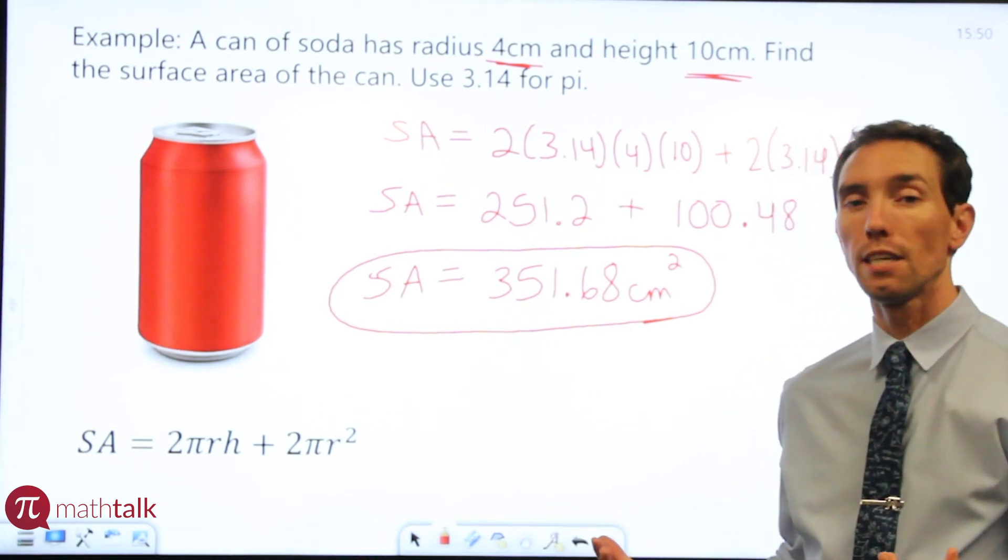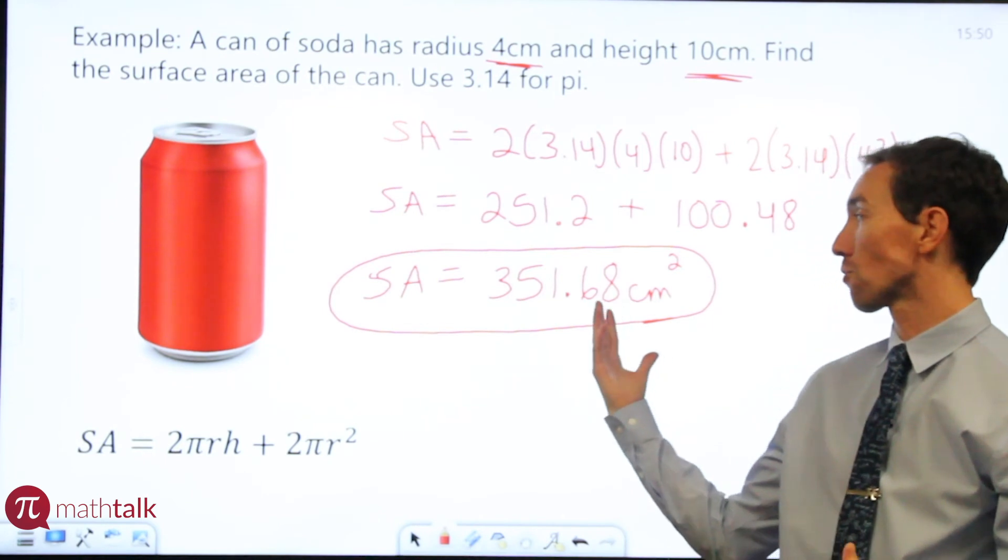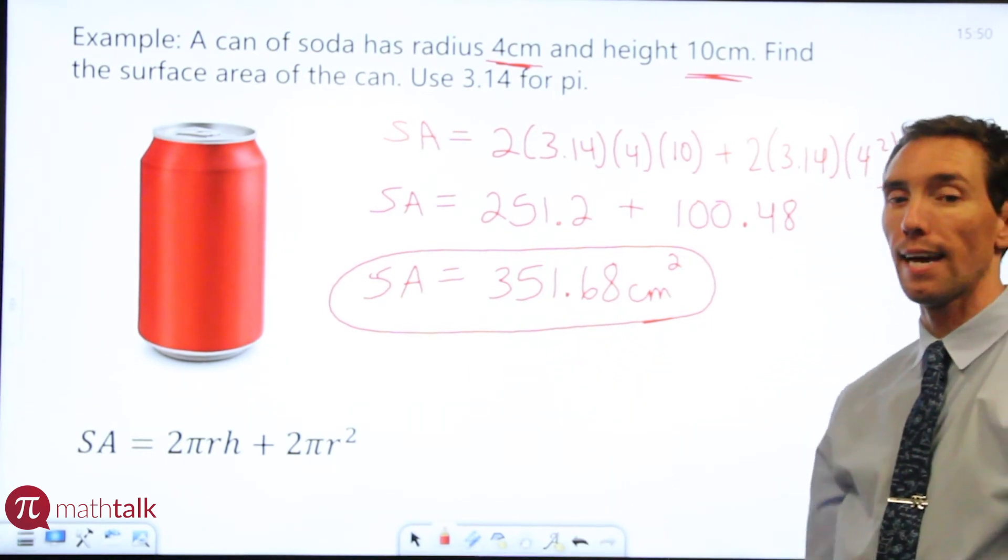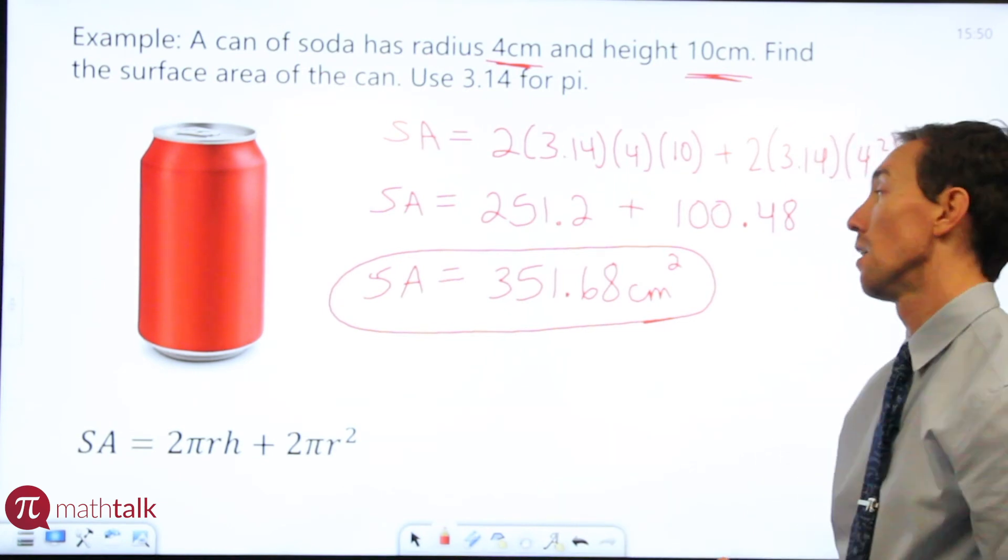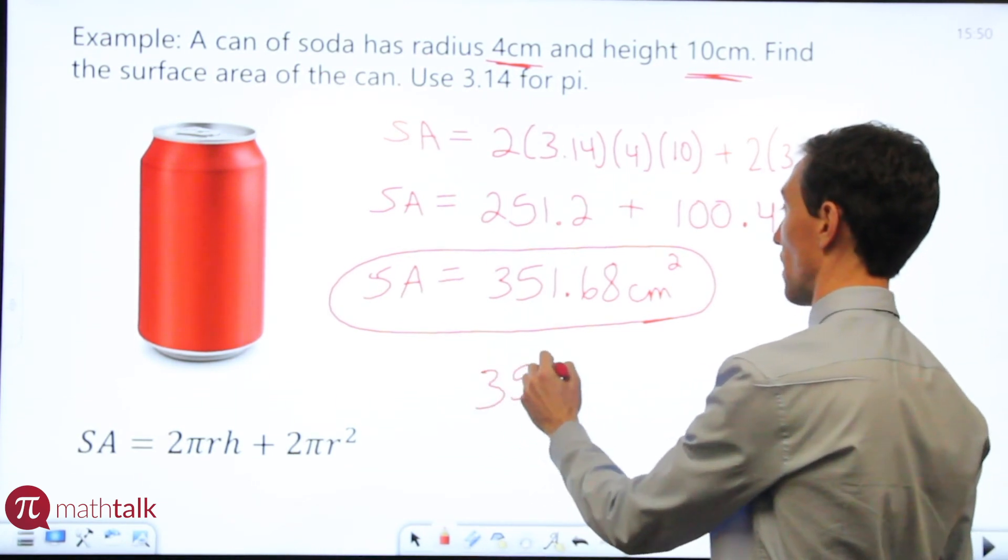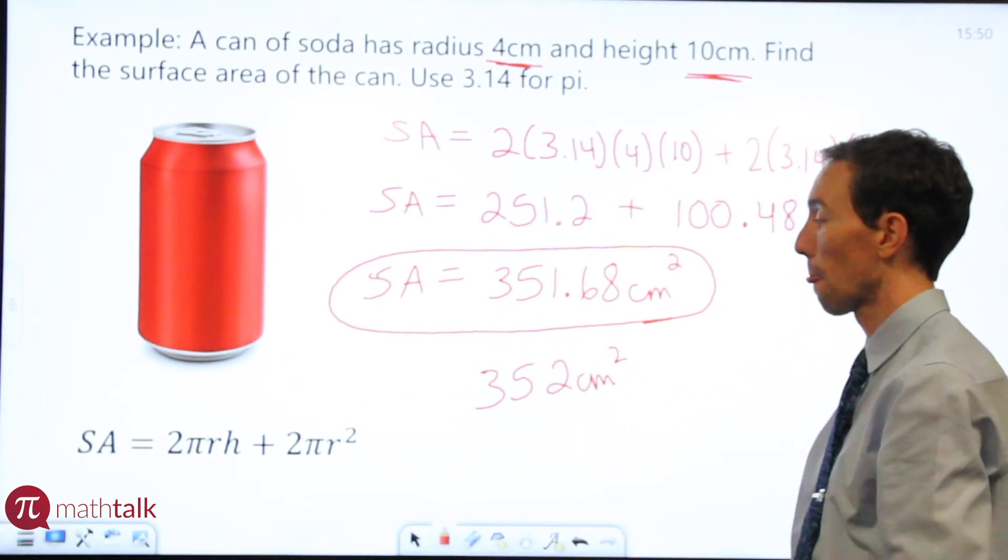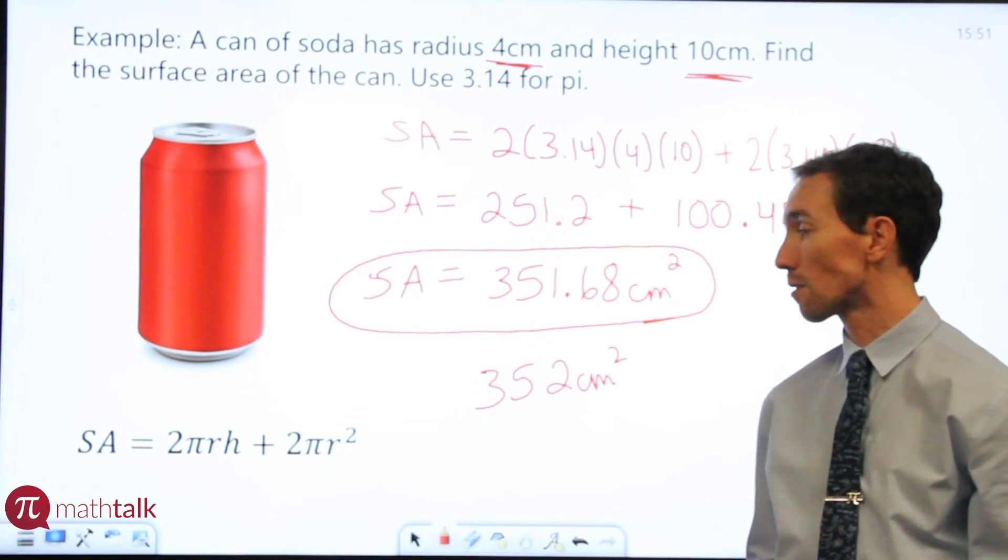So this is going to be the surface area of our can of soda. Now, typically what they will probably ask you to do is round this to the nearest whole number, just because surface areas that are some decimal like that are a little bit of what I call kind of uglier number. It's not as clean. So your answer will probably be 352 centimeters squared, just so you can see that as a possibility in your answer choices.